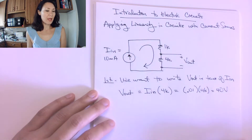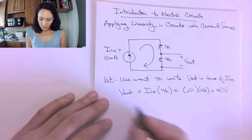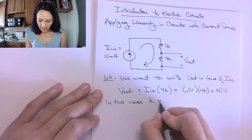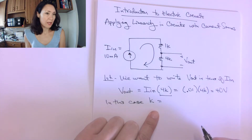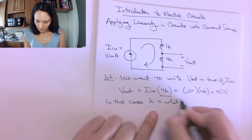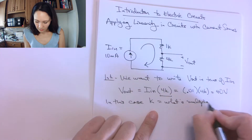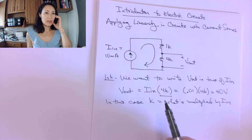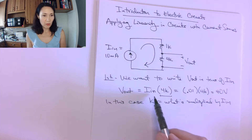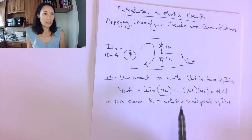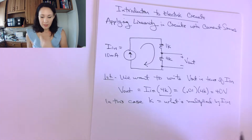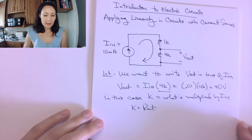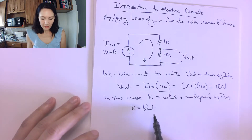So Vout is 40 volts when Iin is 10 milliamps. The scale factor k is equal to whatever constant is being multiplied by Iin. In this case, the current is being scaled by 4,000. So for this simple series circuit, k is equal to Rout. That won't always be the case, but for a simple series circuit, this is what's scaling our current.